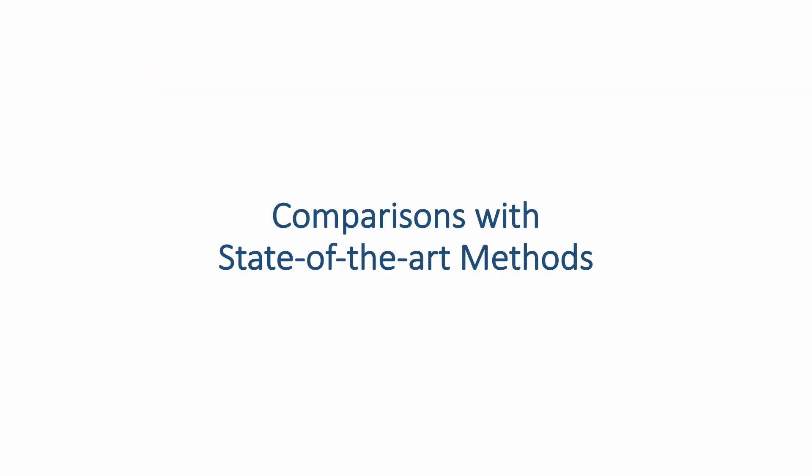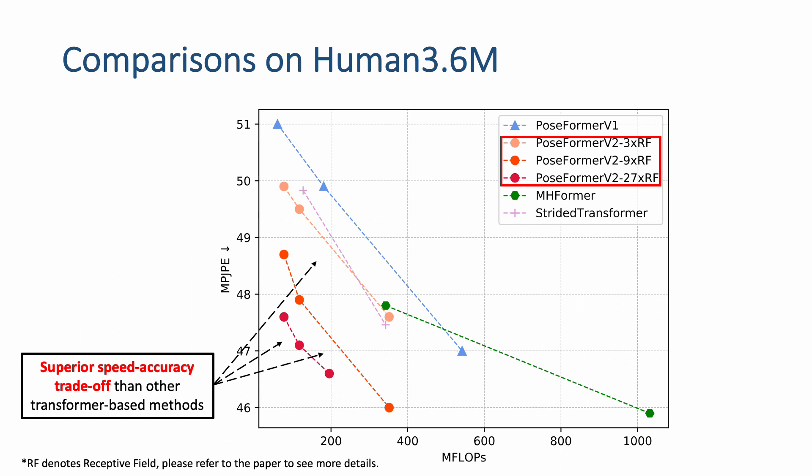We show comparisons with state-of-the-art methods. Our method achieves better speed-accuracy trade-off than existing methods. And note that when we increase the ratio between the full sequence length and the cropped central frame number, the improvements are more significant.